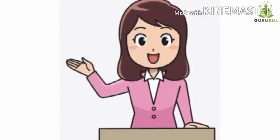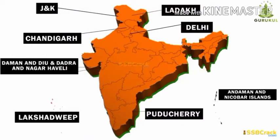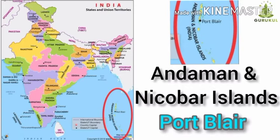Children, now we have learned 28 states and their capitals. Along with 28 states there are eight union territories. Now we will see these eight union territories. First, Andaman and Nicobar Islands — the capital is Port Blair.